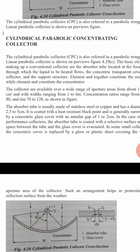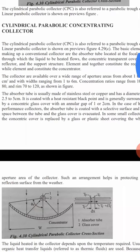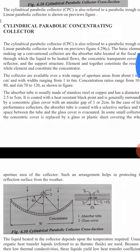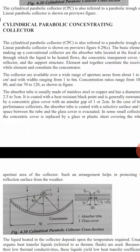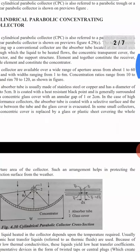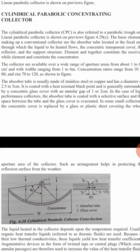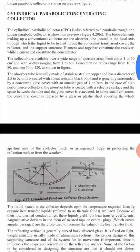The absorber tube is coated with heat-resistant black paint and is surrounded by a concentric glass cover with an annular gap of 1 to 2 centimeters. For very high performance, the absorber tube can be coated with selective surface materials having high absorptivity, and the space between the tube and the glass cover is evacuated to reduce heat loss - that means a vacuum is created.